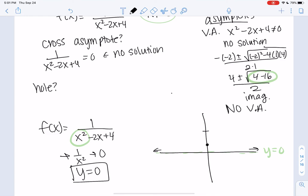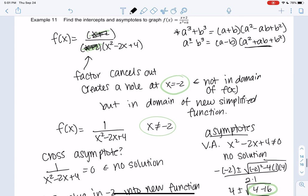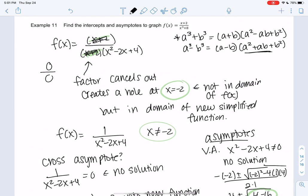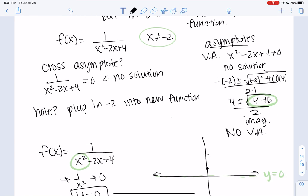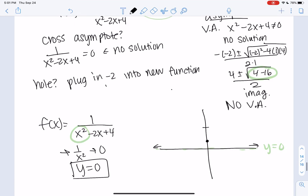And then finally, I'm going to figure out where the hole is. So we plug negative 2 into the new function. I can't plug it into the original because it canceled out and would have given me 0 over 0. If I plug into the original, we get 0 over 0 from this and this. And who the heck knows what that is? So we're going to plug into the new function, which is 1 over negative 2 squared minus 2 times negative 2 plus 4. And it looks like I get 1 fourth. So at negative 2, 1 fourth, we create a hole.